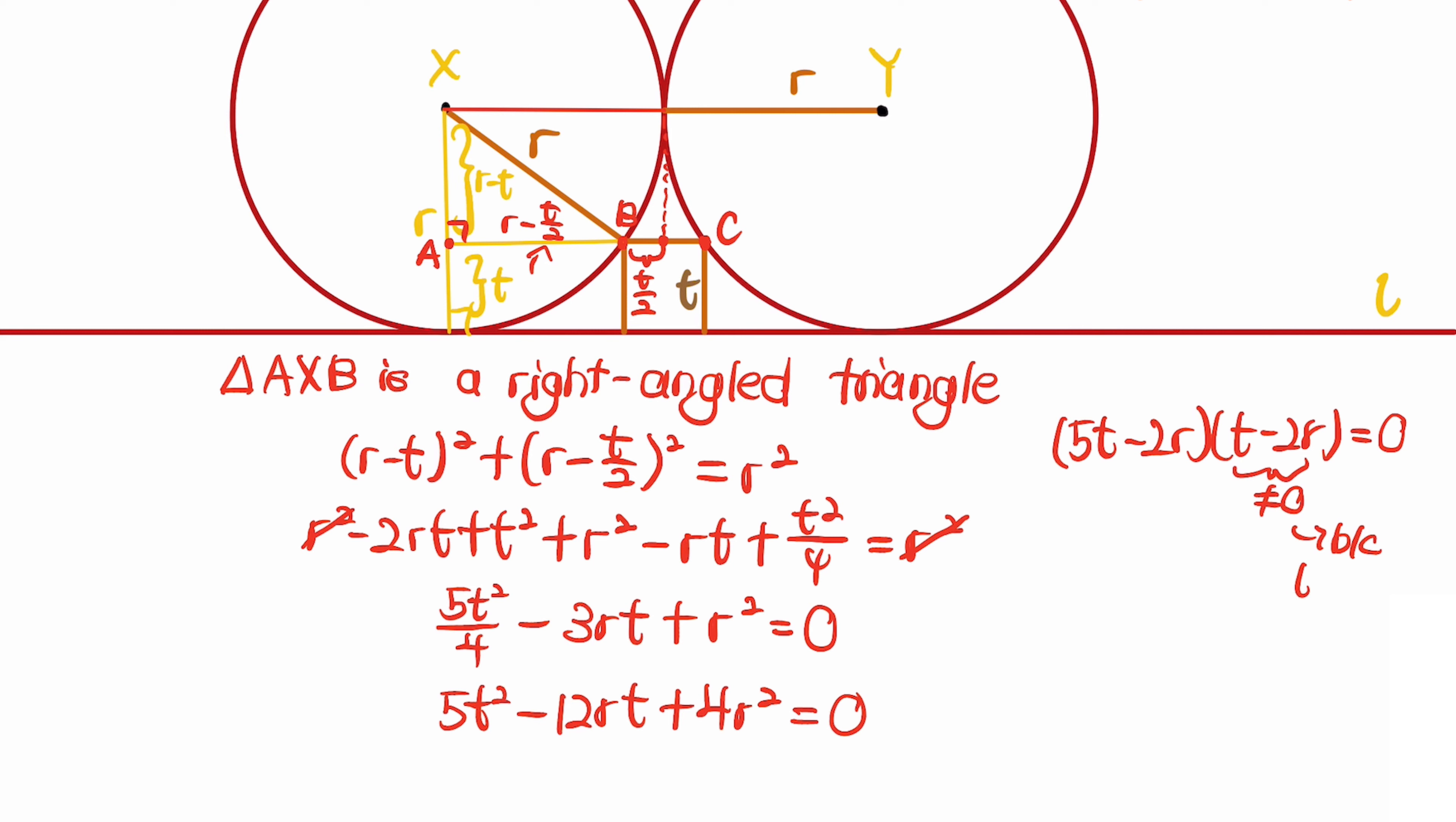Since t is less than r, therefore 5t equals 2r, and we have that t equals 2/5 times r. So we are done. Thank you.